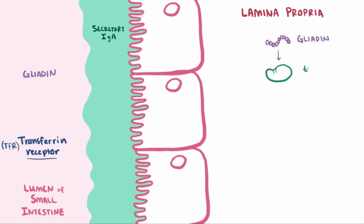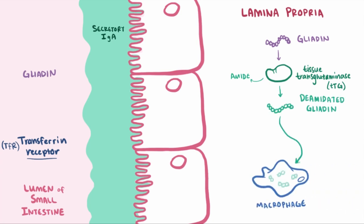Once there, an enzyme called tissue transglutaminase, or TTG, cuts off an amide group from the protein. Deamidated gliadin is then eaten up by macrophages and served up on its MHC class II molecules.